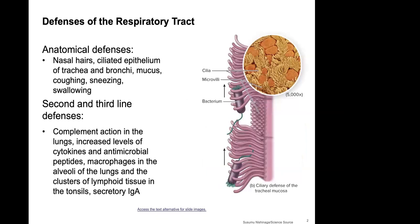The defense mechanisms of the respiratory tract include anatomical defenses such as nasal hairs, ciliated epithelium of the trachea and bronchi, and mucus on that tissue. Coughing, sneezing, and swallowing also help — the mucus and hairs trap many inhaled microorganisms, and enough irritants will trigger a cough or sneeze to expel them from that area.